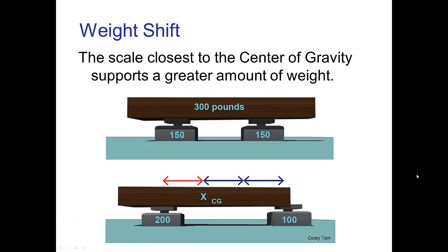Weight shift. If we have an object sitting on a pair of scales, then the scale that's closest to the center of gravity is going to support more weight. So we see in this lower illustration that if the center of gravity is closer to the scale on the screen left, then that scale is bearing more of the weight compared to the scale on the right.